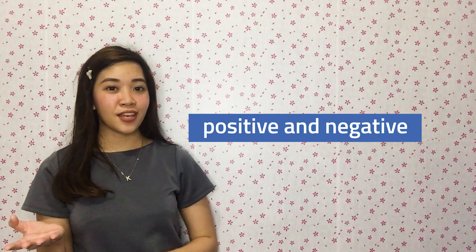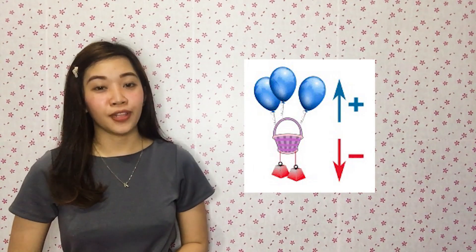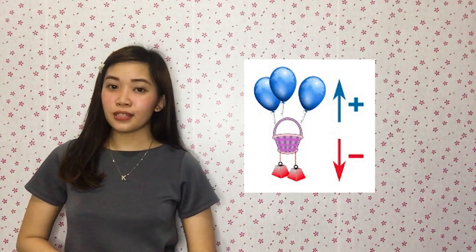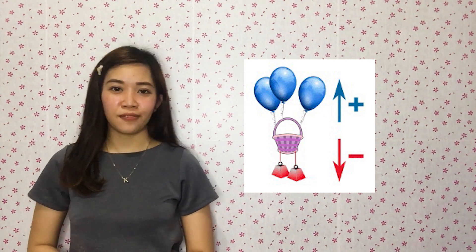Integers consist of two kinds of whole numbers: positive and negative. Have you ever heard this? Where have you used or seen the use of these positive and negative whole numbers? Let me give you an example. Take a look at these balloons and weights. Let's imagine that these balloons are positive numbers and these weights are negative numbers.